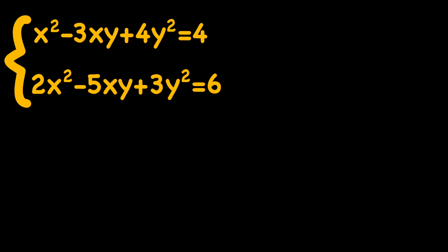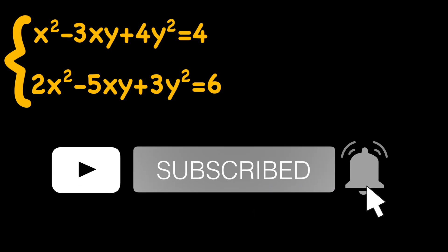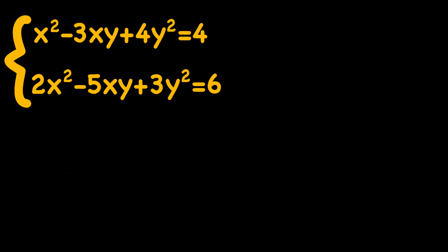So let's go ahead and talk about that. We are given that x squared minus 3xy plus 4y squared equals 4, and 2x squared minus 5xy plus 3y squared equals 6, and we're supposed to solve for x and y.